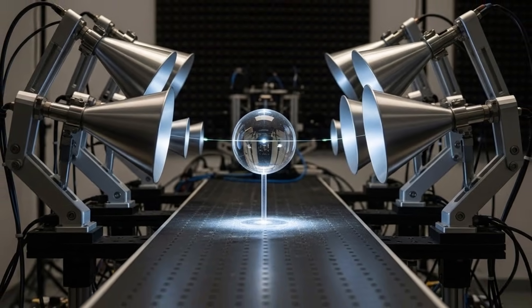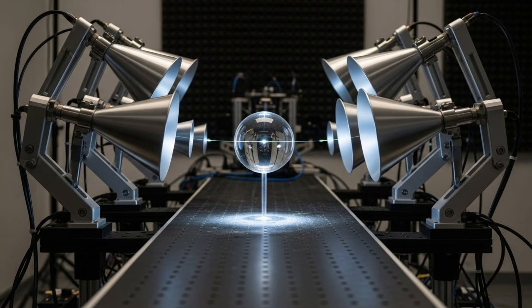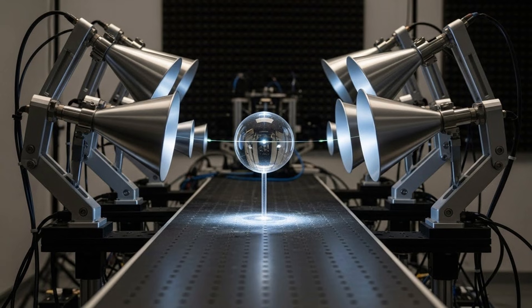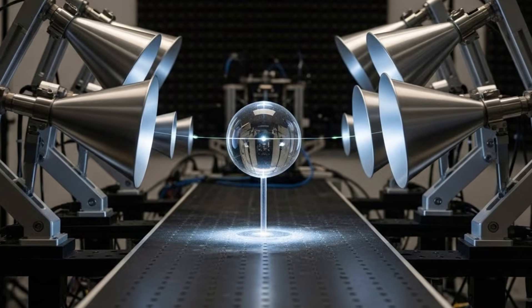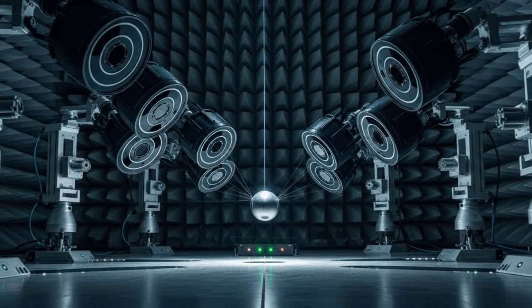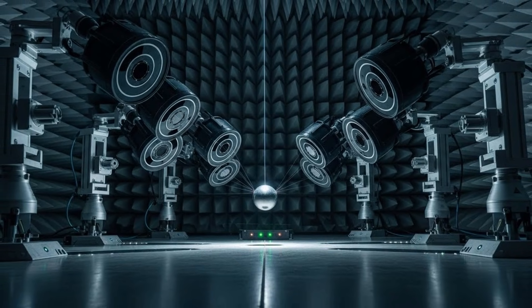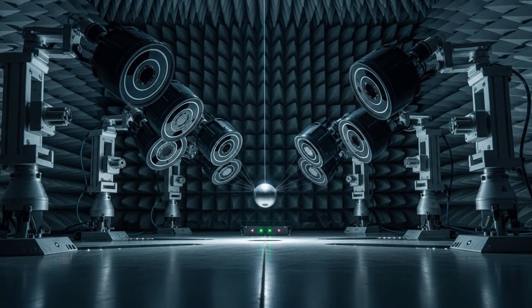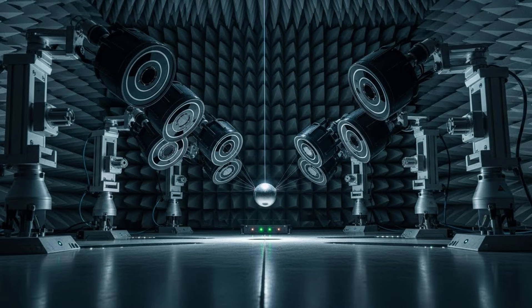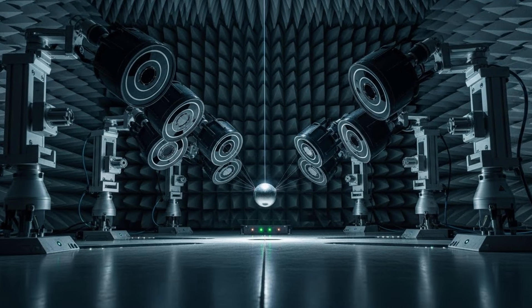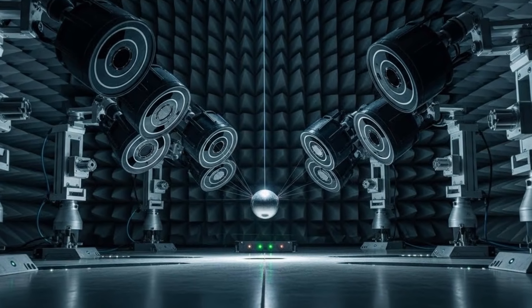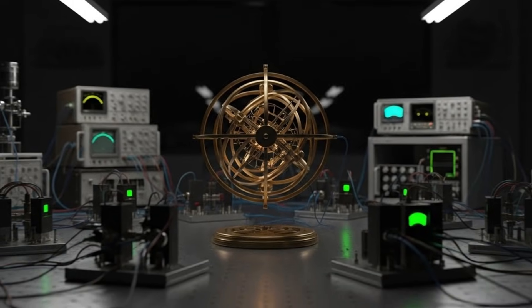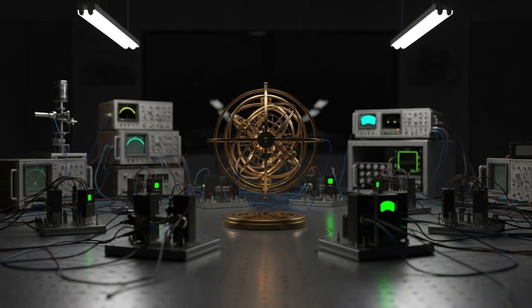Here's where we step into the unknown. Because if this experiment holds up, if it's replicated in other labs, with other teams, and the results stay consistent, we're facing a question that reaches far beyond physics. How does an object 1.2 billion kilometers away, in the cold silence of Saturn's orbit, exhibit properties that respond to human language? There are three possibilities. None of them are simple.